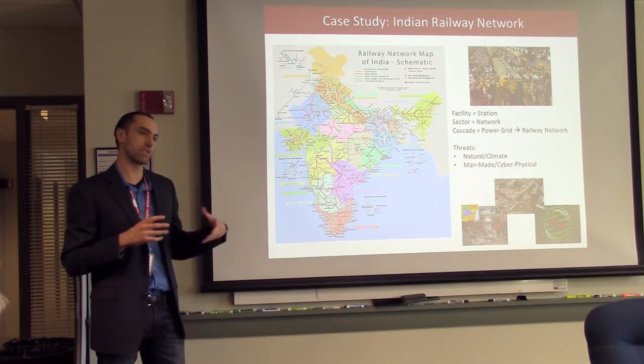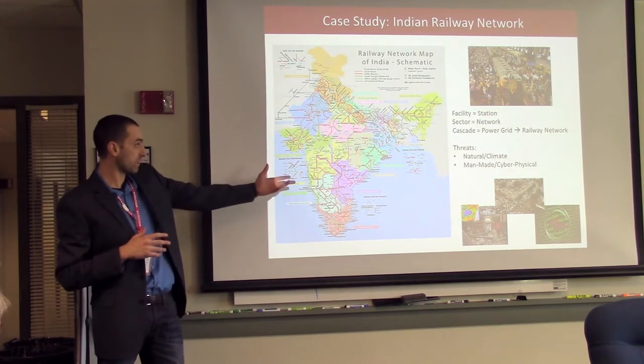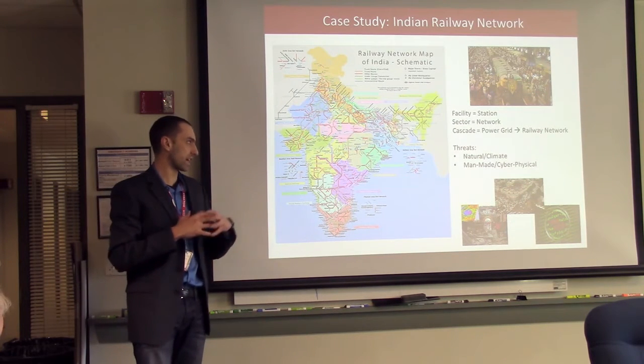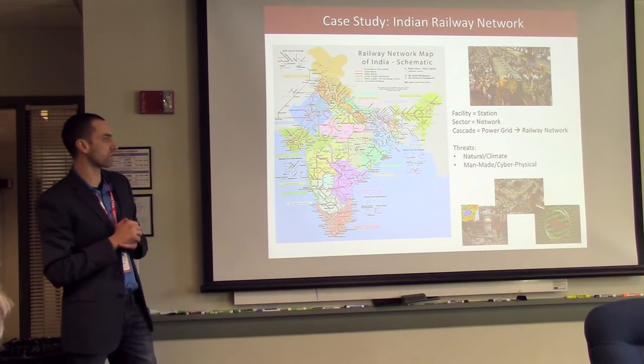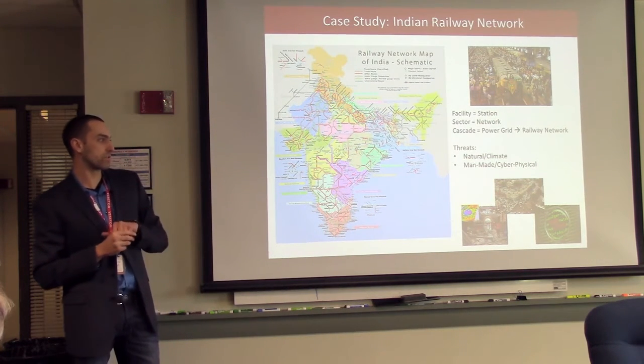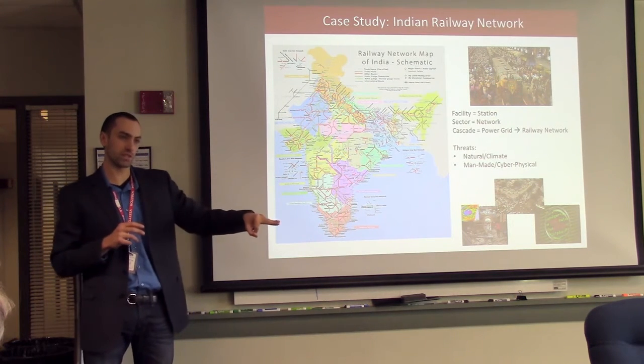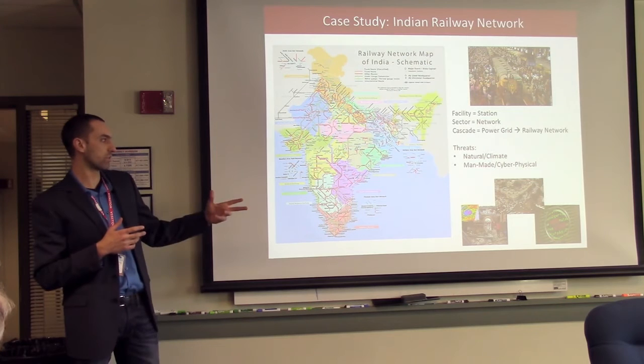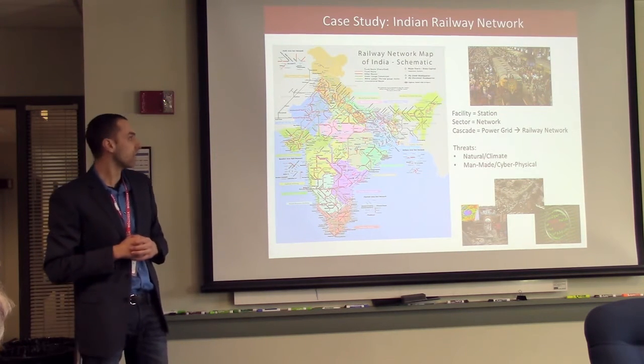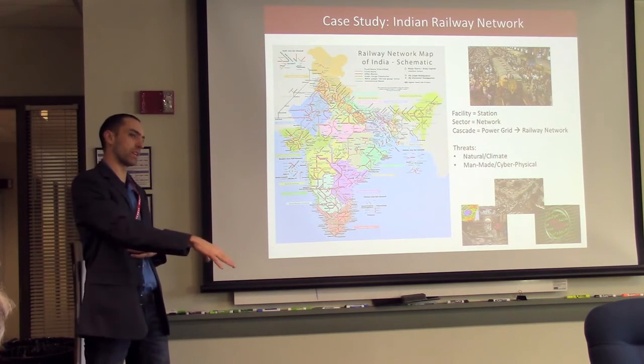A sector is a network or a system. So a sector could be the electricity sector. In this case, this is a transportation sector. And then some vernacular like cascade. So in the event of 2012, there was a massive failure of the power grid. It was interesting if you trace the roots of that failure. It was actually a cascade through multiple systems which ultimately related back to weak monsoon rainfall, over pumping of ground water, and a lack of water to support the power grid, which then caused the railway network to fail.